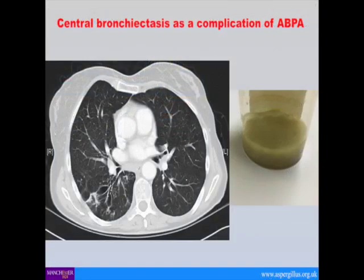Bronchiectasis complicating ABPA produces very saccular airways. It can be localised, described as central — near the hilum — but actually it occurs anywhere. Patients produce a lot of horrible green sputum or have small haemoptysis.